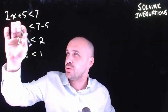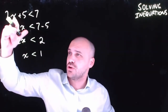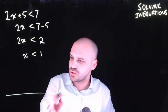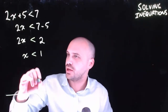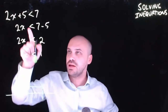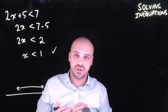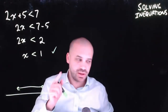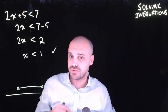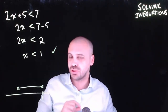So 2x plus 5 is less than 7 — we're told that in the first line, and solving it we find that x is less than 1, which we could plot on a number line. This is good working. Solving inequalities are exactly like solving equations, but they're not — there is one tiny thing you need to look out for.